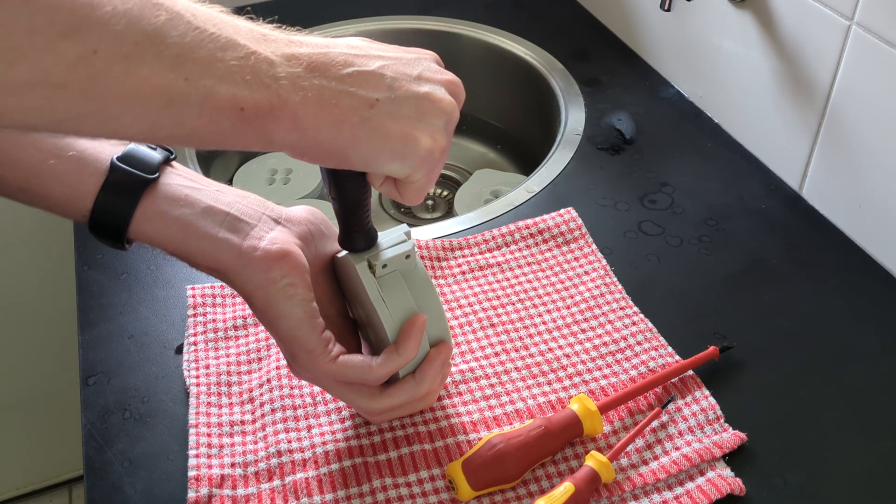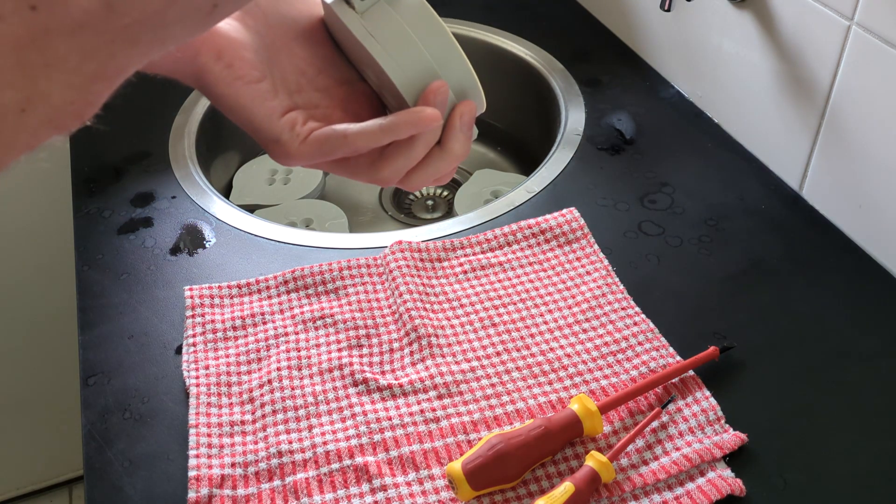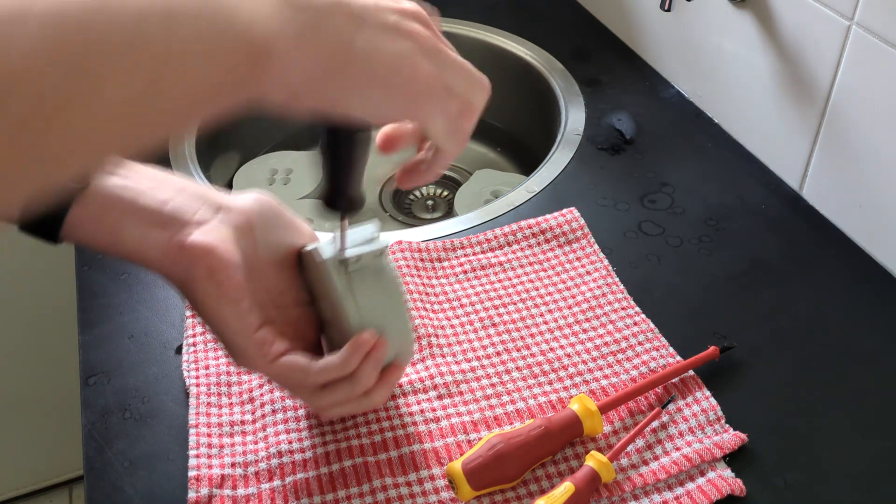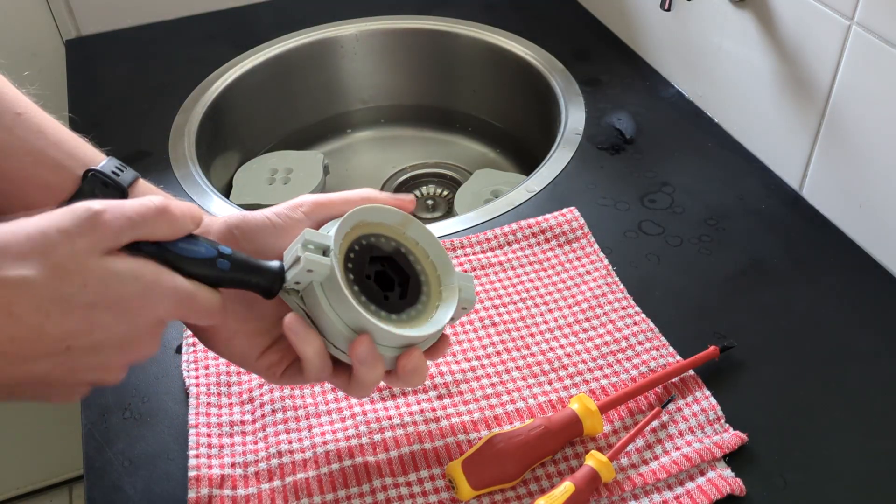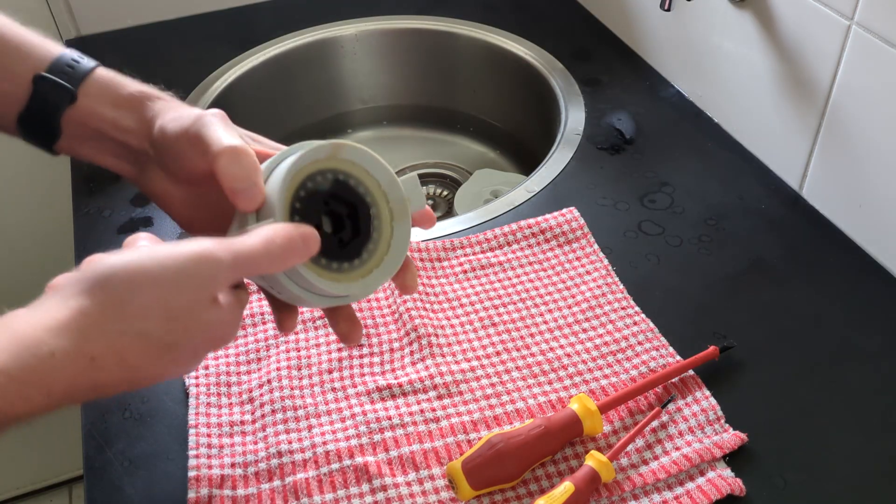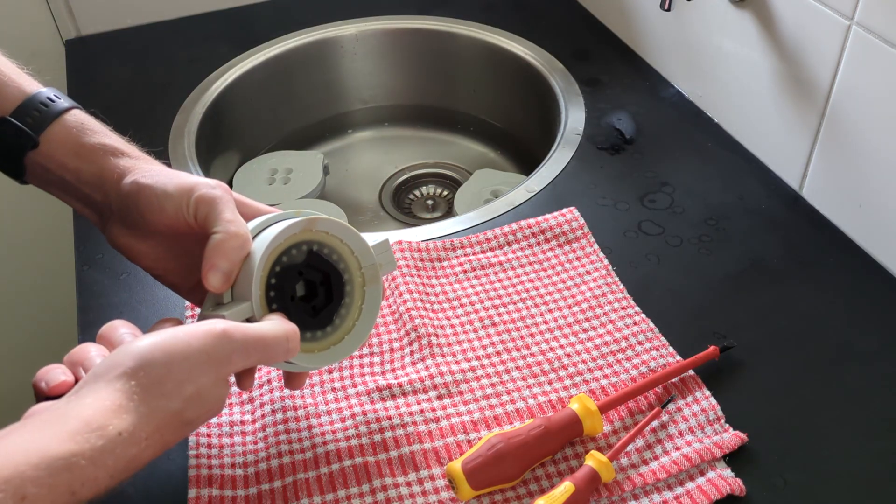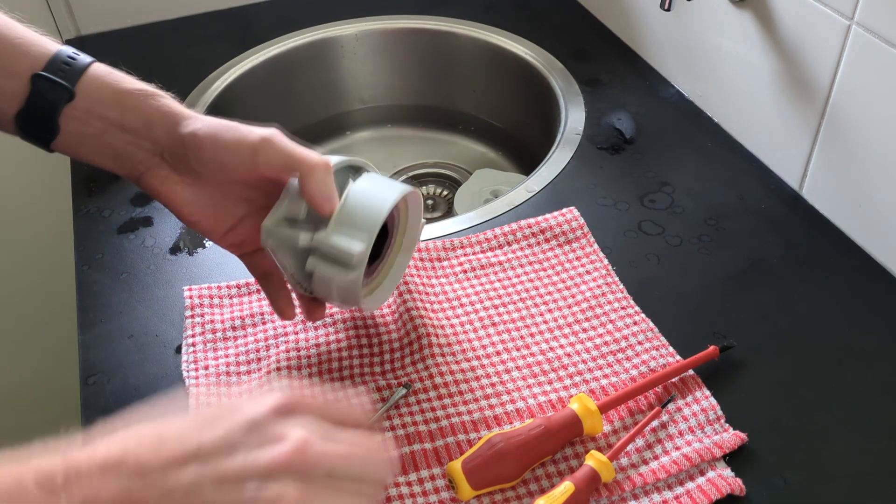I usually print them using my stronger print settings and in this case they were going to take a very long time to print so I printed them in the weaker print settings which led to breaking most of the bottom sections of these molds which isn't good. It means to do another round of wheels I'm going to have to print a whole new set of molds which is not ideal. I would prefer to be able to use one set of molds to do as many wheels as I need but sometimes you don't get that.